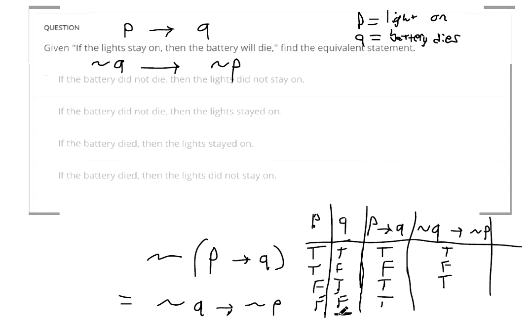And then true implies, so this would be true and this would be true if we negate them. Look, the two truth values match. So this statement is the same.